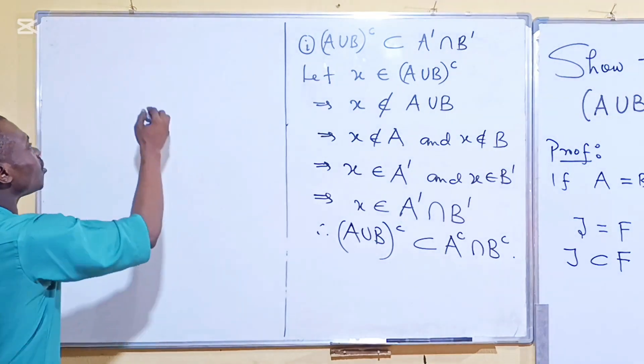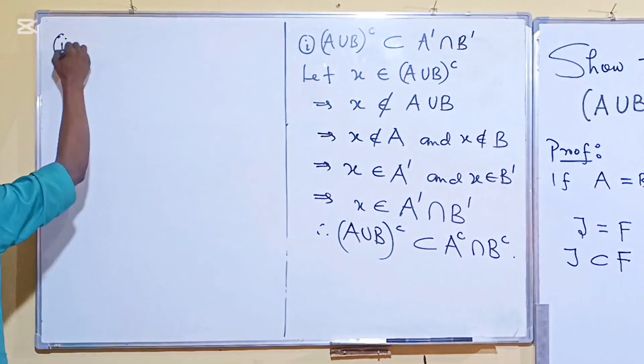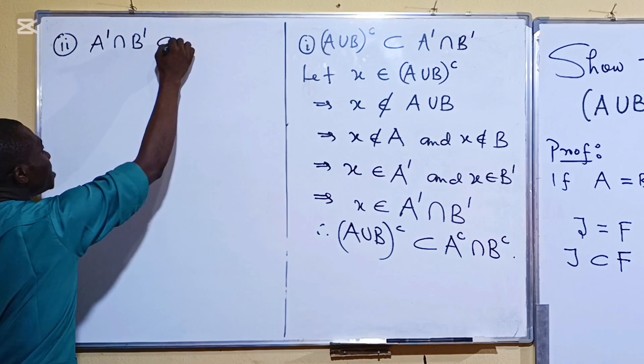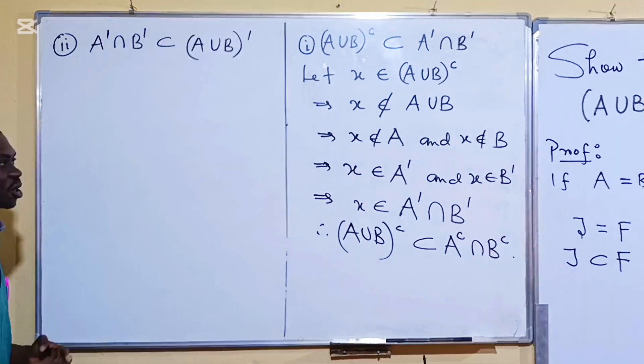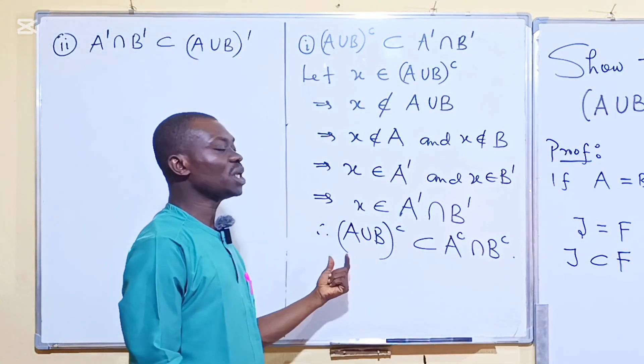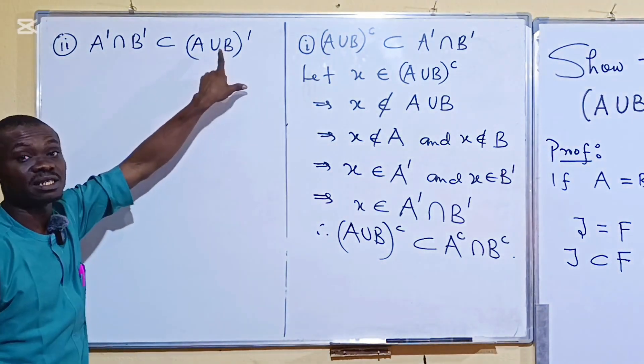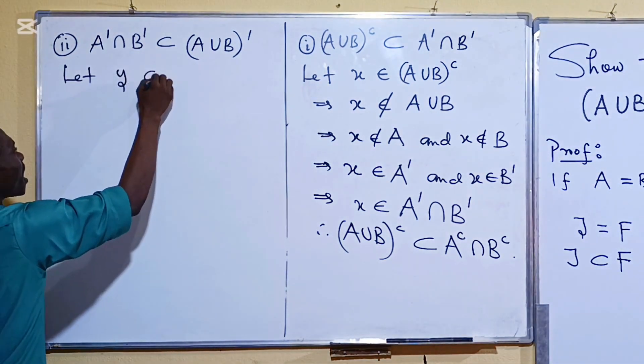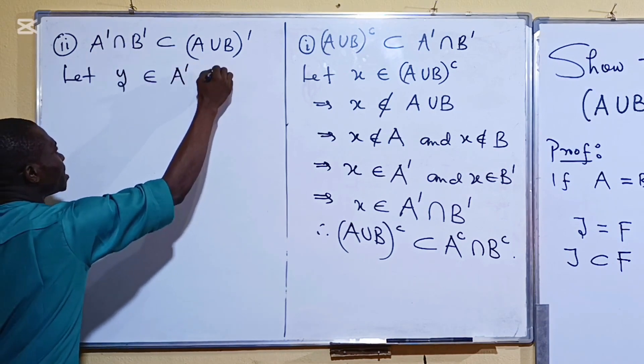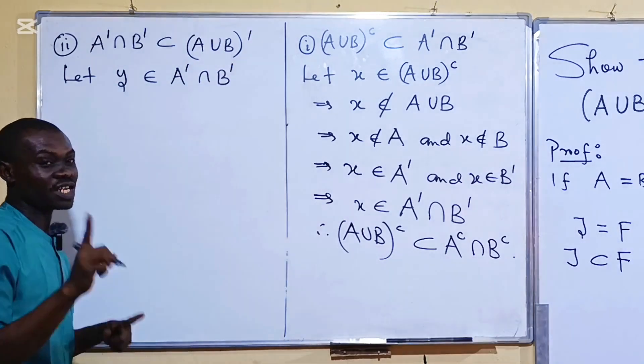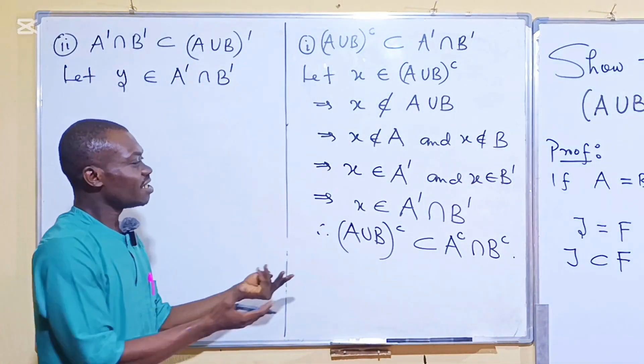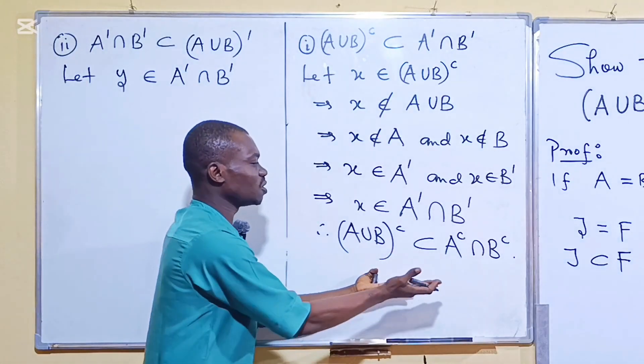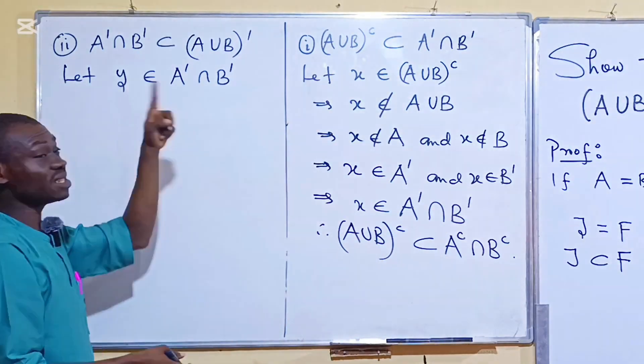So the second part of the proof is the opposite. Here now we want to show that A complement intersection B complement is a subset of A union B complement. So what do you do? The same argument. You are going to pick an arbitrary element here and show that it is here. So in this case let's pick Y. Let our Y be in A complement intersection B complement. And the beautiful thing you will notice here is that this one now is going to be a reverse argument of this one. So I will just argue this upwards and then I'm going to get the other proof.